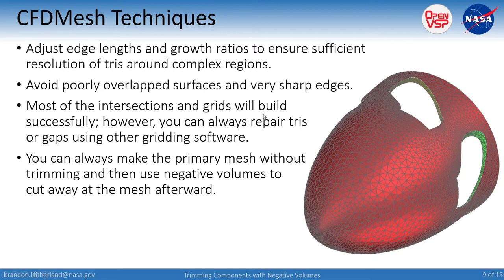For CFD mesh techniques, adjust lengths and growth ratios to ensure sufficient resolution of your triangles, and as usual avoid poorly overlapped surfaces and very sharp edges. If you're exporting into CFD software and find gaps in the triangulation, you can repair that after the fact — this process does 99% of the work, and you just need to fix a few spots. You can also make the primary mesh without trimming in an unstructured CFD mesh first, then bring it back in and use negative volume to cut away afterward.